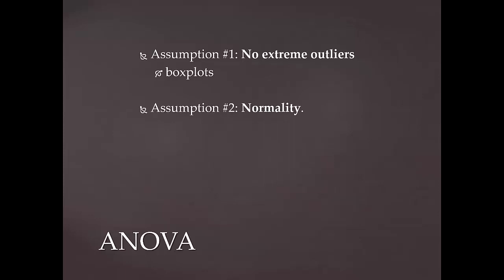The second assumption is the assumption of normality. The normality assumption assumes that the distribution of the dependent variable is normal in each group. We check for normality by creating either histograms or conducting normality tests, such as Shapiro-Wilkes or Kolmogorov-Smirnov.